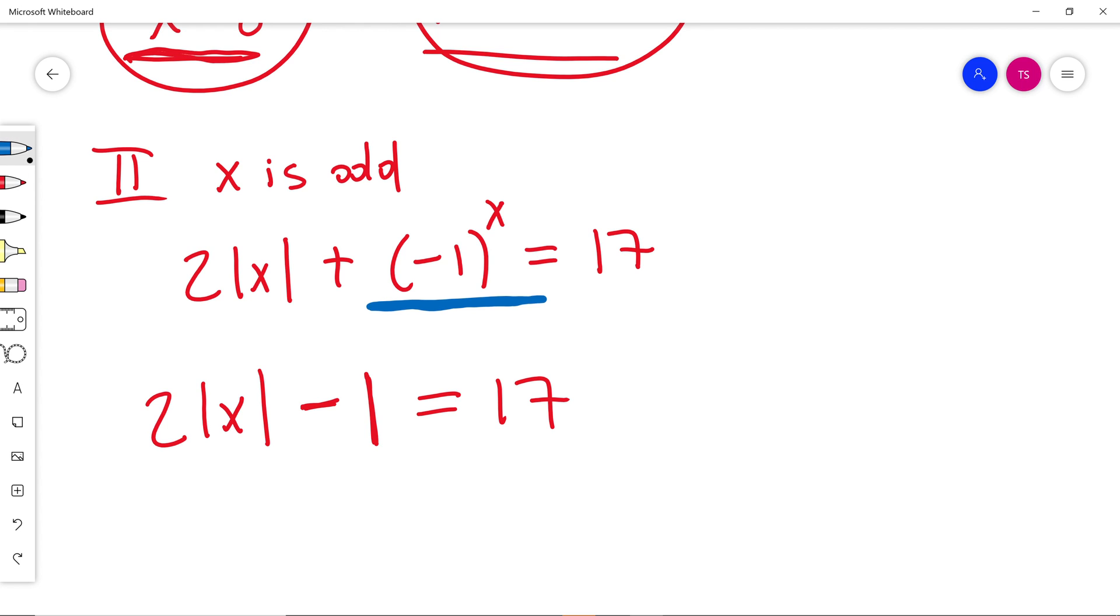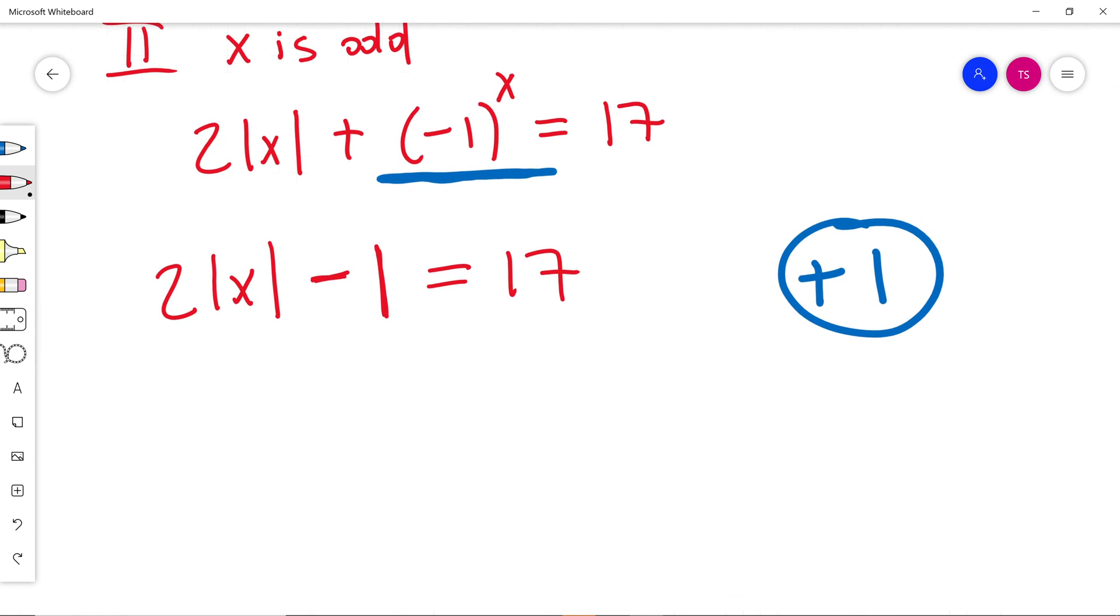At this moment, I will plus 1 on both sides. So my equation will be 2 absolute value of x will be equal to 18. I will divide both sides by 2.